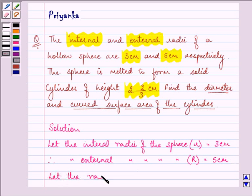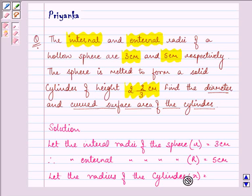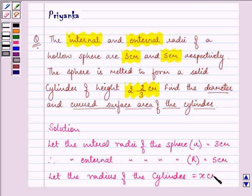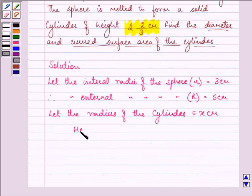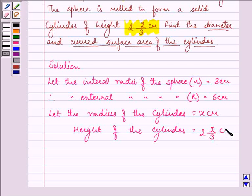Let the radius of the cylinder be equal to x cm. Also, we are given the height of the cylinder as 2 and 2/3 cm, that is equal to 8/3 cm.